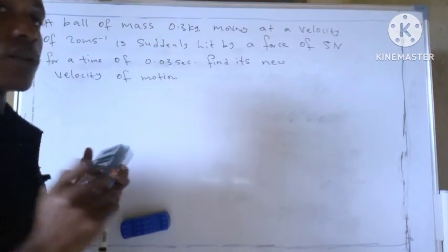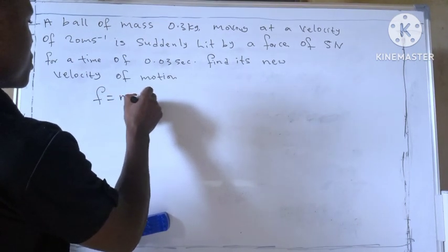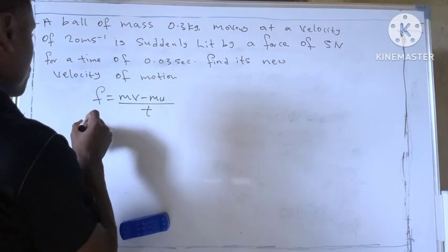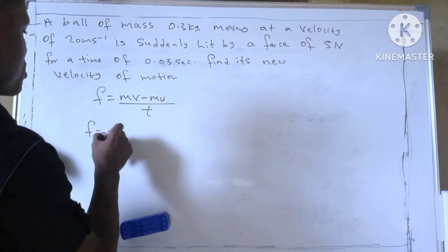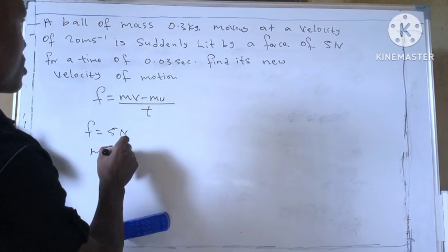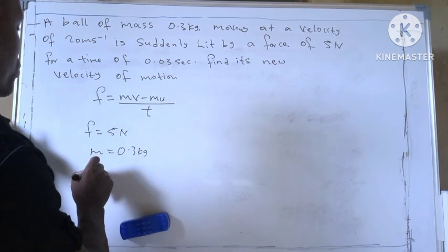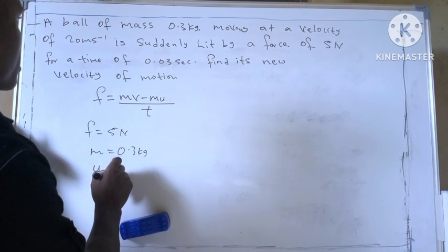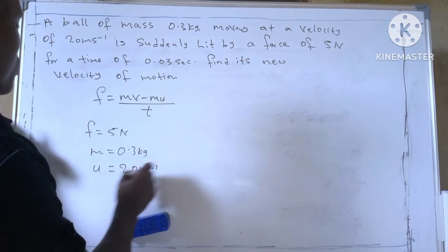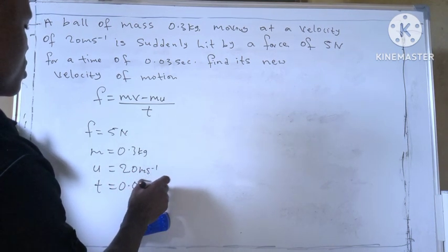So we know from the second law of motion, we have a particular formula which is F equal to MV minus MU over T. So here, force is given as 5N. Our mass is given as 0.3 kilogram. Then our U, which is initial velocity, is 20 meter per second. Our time is given as 0.03 second.